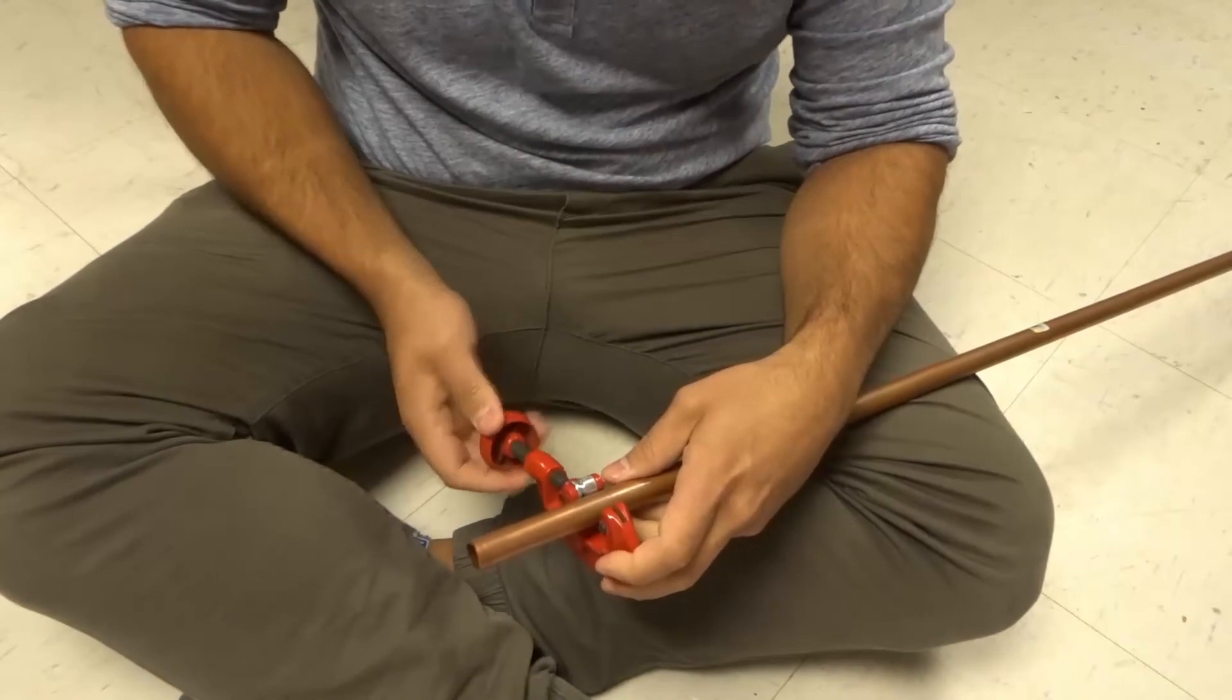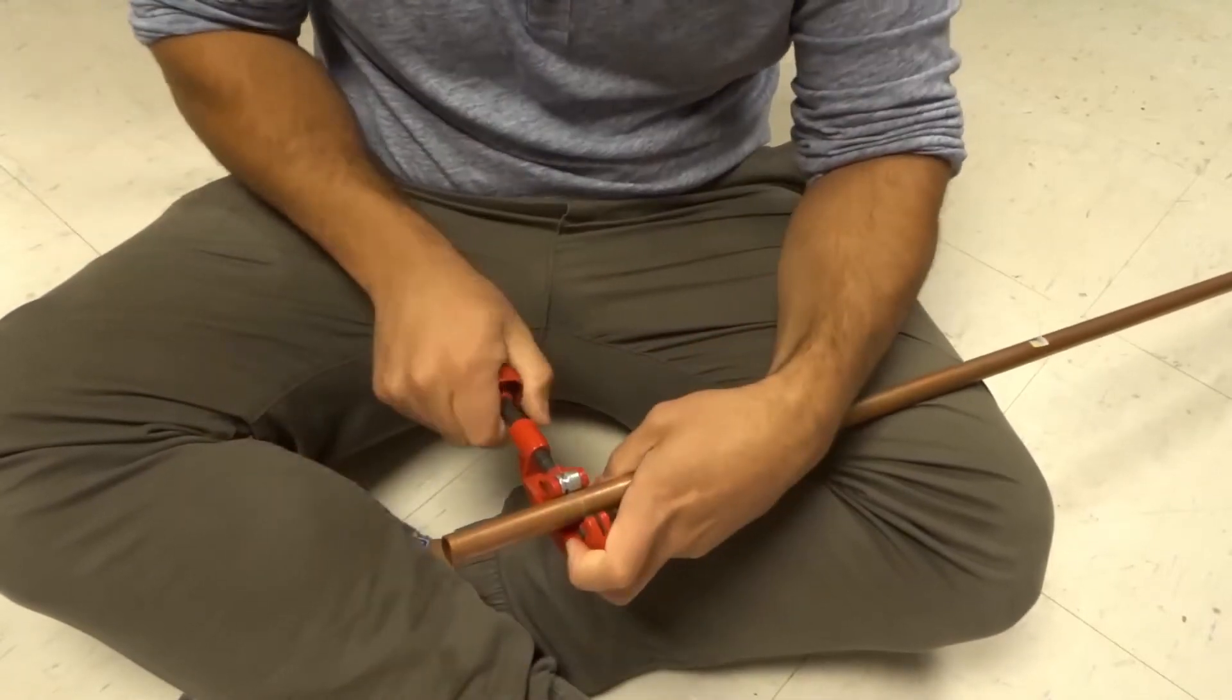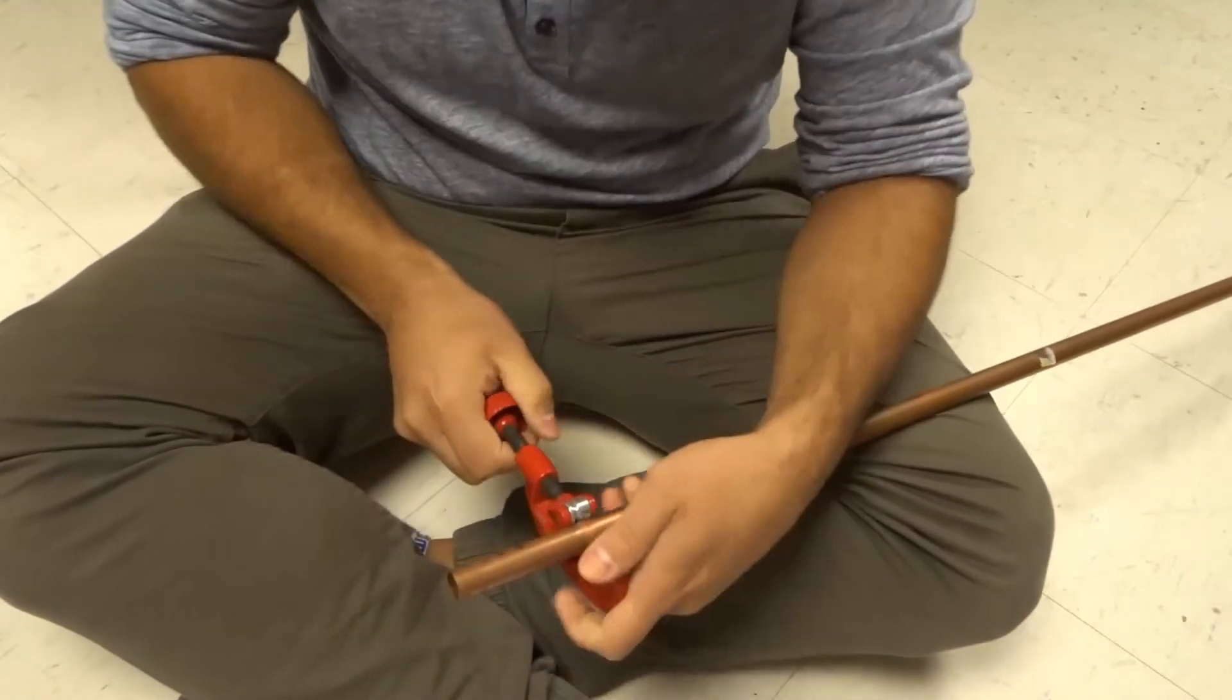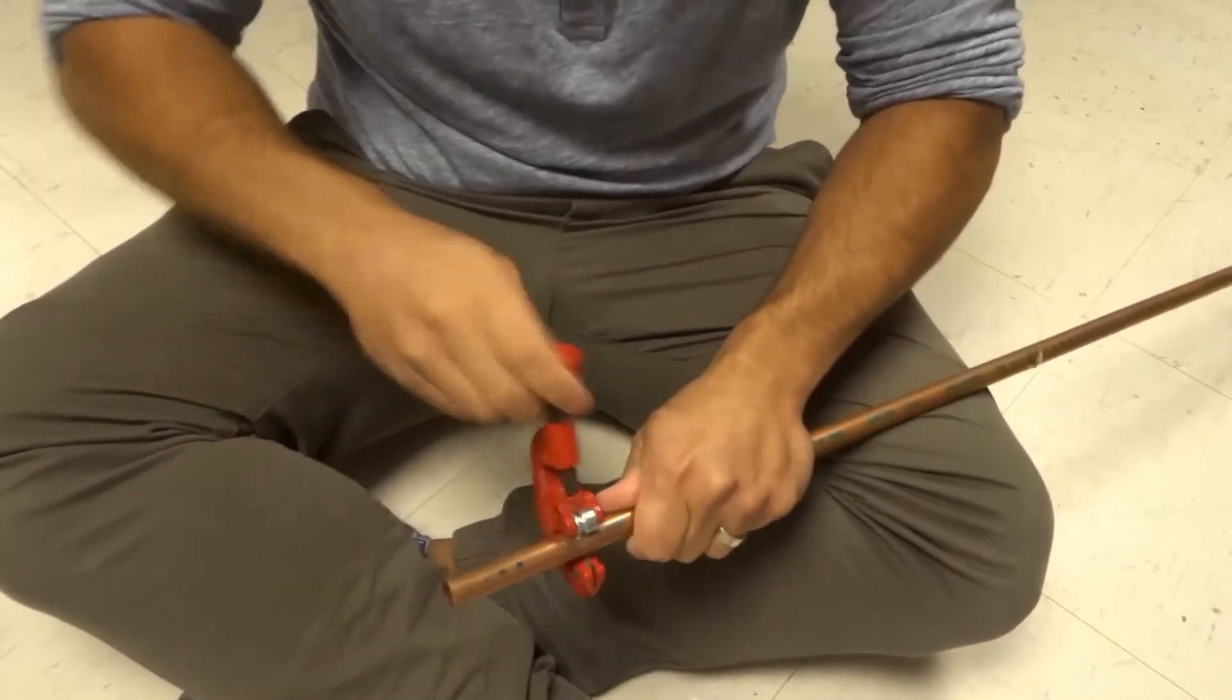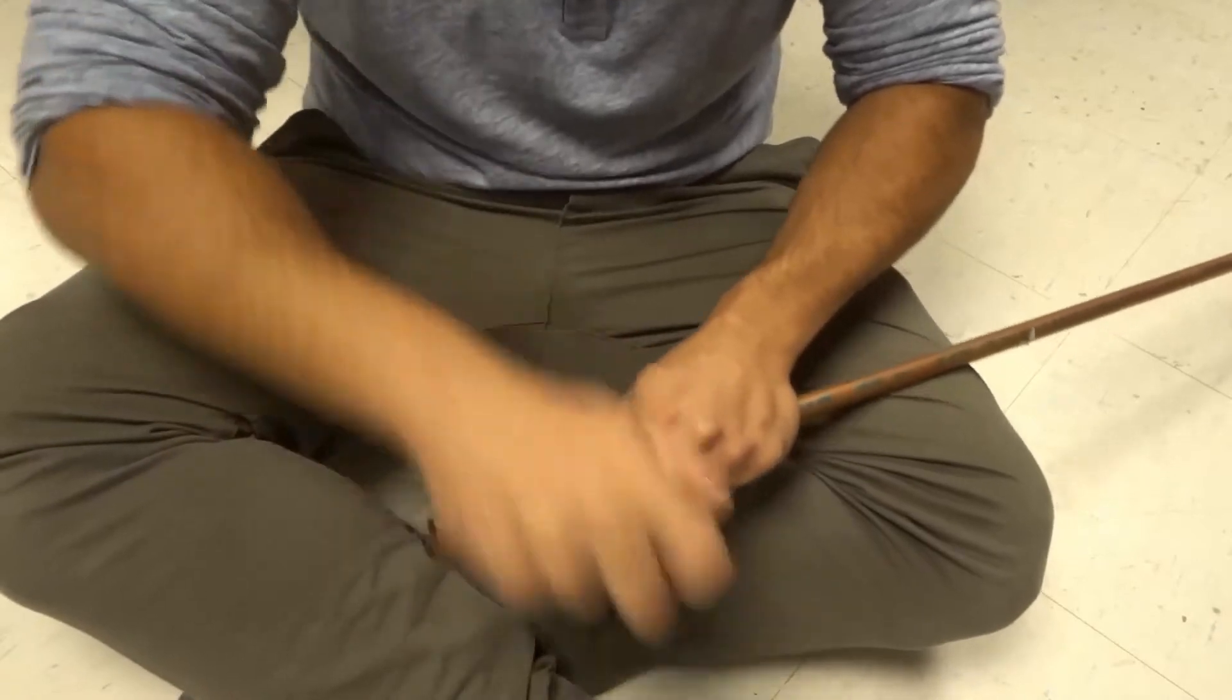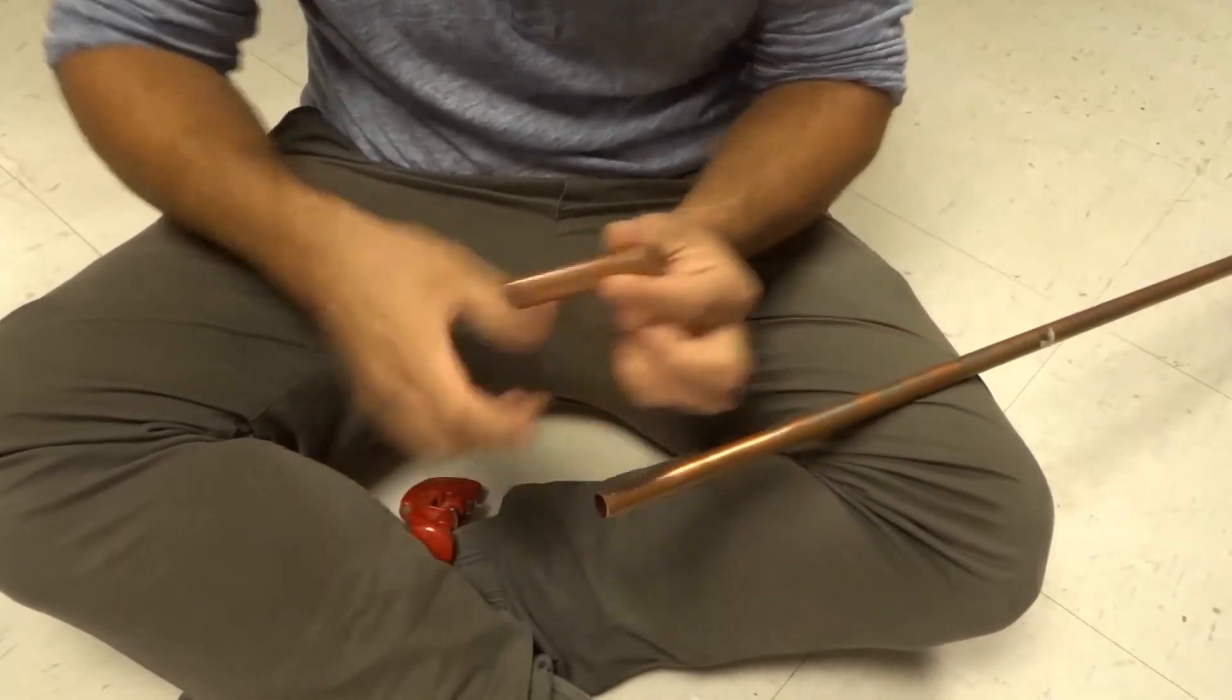Then you want to tighten this so that it's even tighter, rotate it around a few times, and then tighten this, rotate it around a few times, and then tighten this, rotate it around. You can rotate it a few more times to make it a little bit easier, tighten, rotate it, tighten, rotate it.